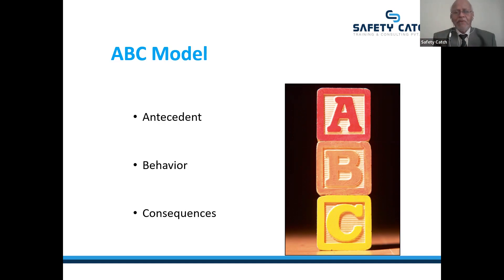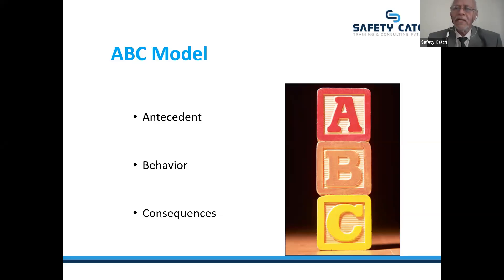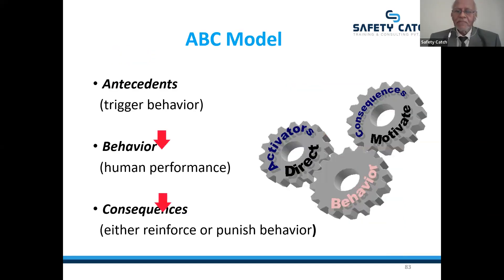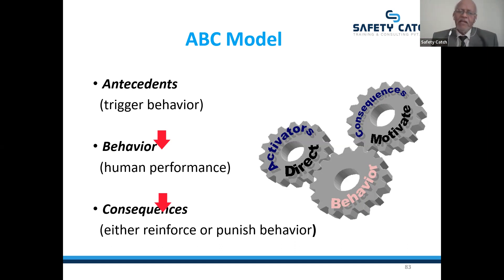So are you clear about ABC now? Yes, sir. Sir, my question is: antecedent can be varying at different times. Yes, it can, depending on various circumstances — antecedent can vary. Antecedents trigger the behavior, and behavior is what we can see — it is human performance — and then consequences. You can also see the outcome of that behavioral change, which can either reinforce or punish the behavior. So that is the consequence.